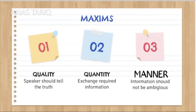Maxim of manner. According to this maxim, all information should not be ambiguous and obscure. Information should be brief and clear. According to the maxim of manner, information should be clear and should not be ambiguous.